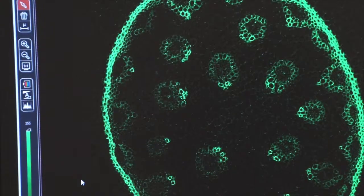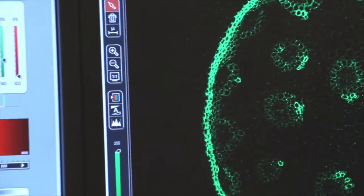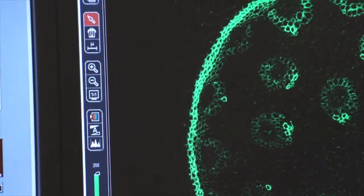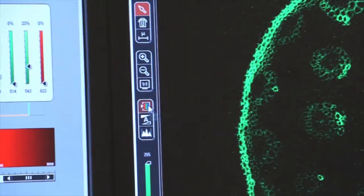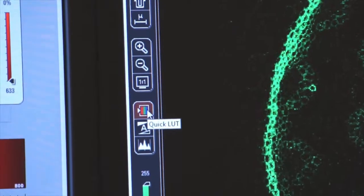We now have a live image on the screen and I want to show you an easy way to set the gain and the offset so that your images are the crispest they can be. If you click on this little box here, this is the quick lookup table.